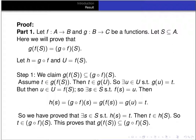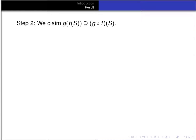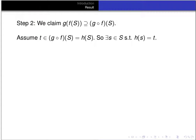We're halfway to proving this set equality. Now let's prove that the image of S under g composed with f is a subset of g of f of S. Here h is still g composed with f and U is still f of S. Suppose t is an element of the image of S under g composed with f, i.e., under h. That means there exists an element s in S such that h of s equals t.